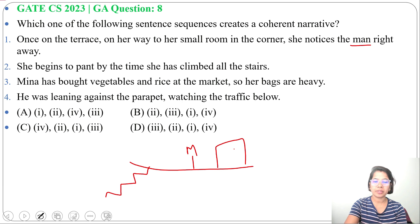Then third statement: Mina has bought vegetables and rice at the market, so her bags are heavy. So first will be statement three - Mina has bought vegetables and rice at the market, so her bags are heavy.